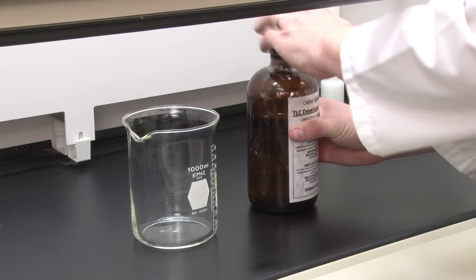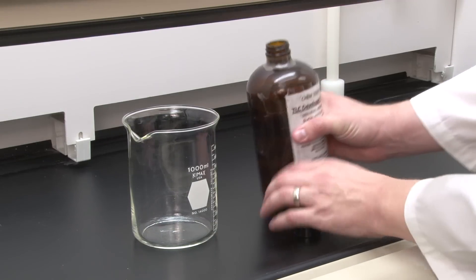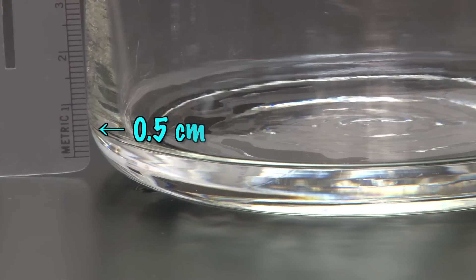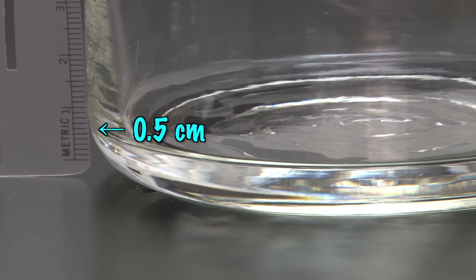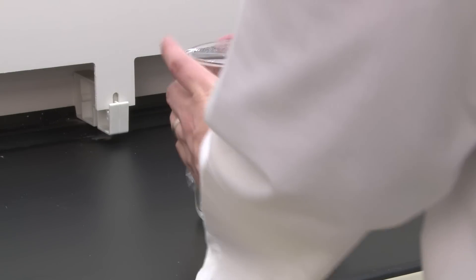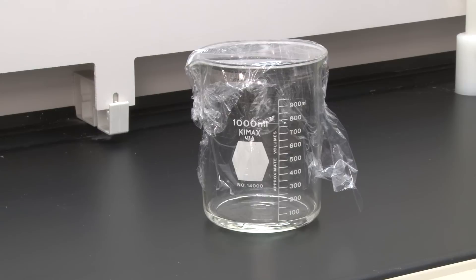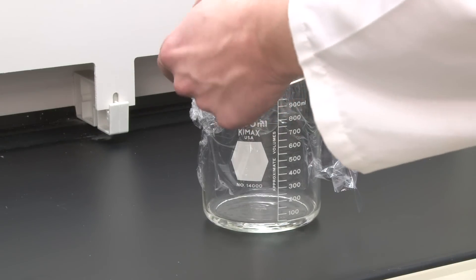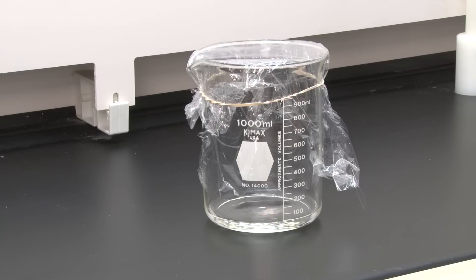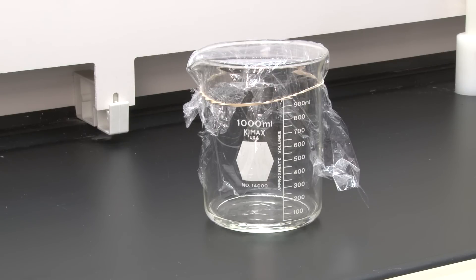First, you'll prepare a developing chamber under the hood by pouring a pre-made developing solvent mixture into a 1-liter beaker to a depth of about a half a centimeter. Cover the beaker with plastic wrap or a large watch glass. When the container is airtight like this, the solvent vapors will fill the chamber, and the developing process later will work much better. Set the chamber aside under the hood for later.